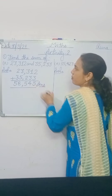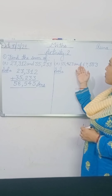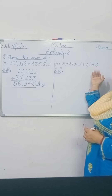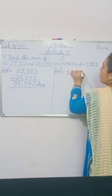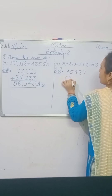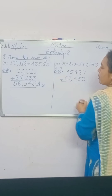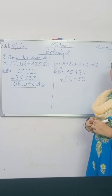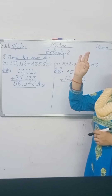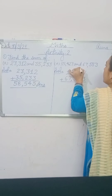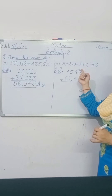Now write the answer here. The next part is 15,427 and 67,553. Write your numbers in solved form: 15,427 and 67,553. Now add your numbers. 7 plus 3 is what? After 7, you count 3 fingers: 8, 9, 10. That means 10 — write 0 in the ones place and 1 in the tens place. That 1 is carrying.